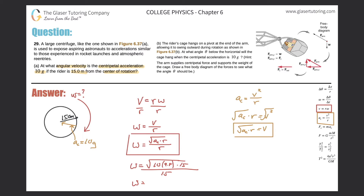Taking out the calculator: square root of 98 times 15, divided by 15, gives us 2.56 radians per second. That would be the answer for letter A. Now let's move on to letter B.